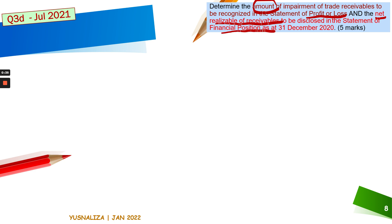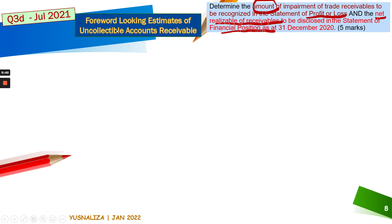Earlier we have already calculated the expected credit loss in our previous video. The expected credit loss is the forward-looking estimate of uncollectable accounts receivable that the company uses to foresee which receivables may have problems and what monitoring policies should be done to cater for uncollectable accounts receivable.